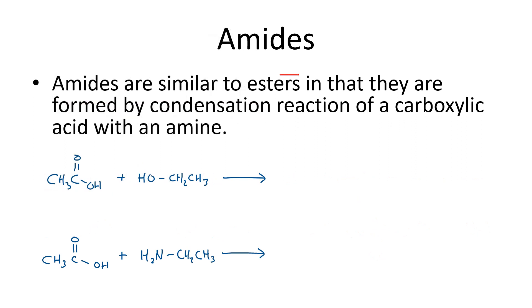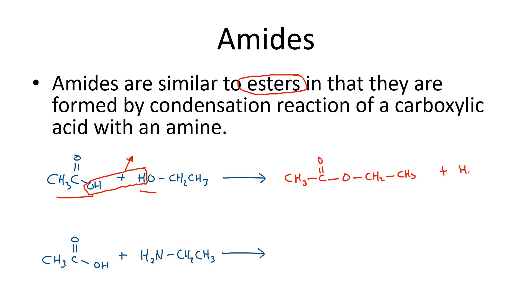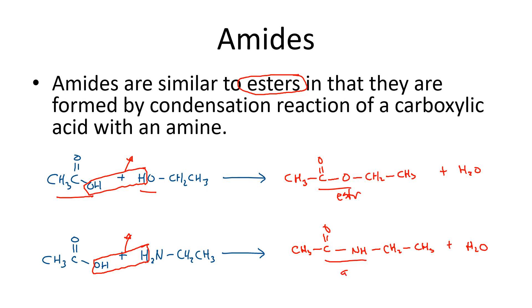Amides are formed in a very similar way to esters. With an ester, you take a carboxylic acid and an alcohol, do a condensation reaction removing water, and get the ester linkage. With an amide it's pretty much the same thing — just using an amine and a carboxylic acid. You remove water and end up with CH₃ C(=O) NH CH₂CH₃ and water. Very similar to the ester.